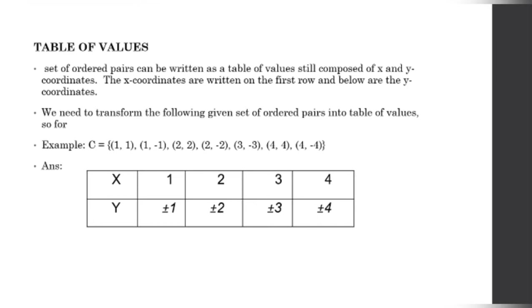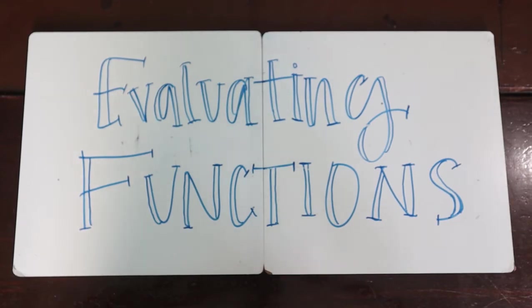For example, C equals (1,1), (1,-1), (2,2), (2,-2), (3,-3), (4,4), and (4,-4). You just put it in the table. So there's 1, 2, 3, 4. We just don't repeat the numbers in x that are the same. And then y, all the numbers are present. There are many more ways to express functions and relations like mapping and graphing, but that's not our focus for today.